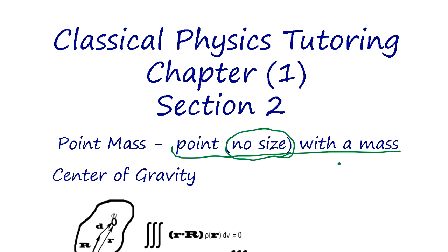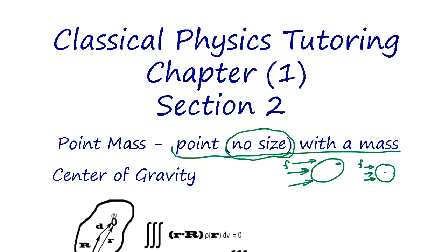Why is this so important? When you have some object and you apply a force, there is ambiguity about which point of this physical object you give the force — here or here. For example, a pool cue ball hitting here or there, it all makes a difference with the same force F.